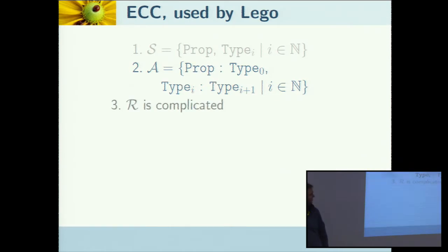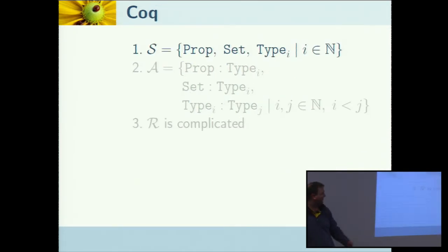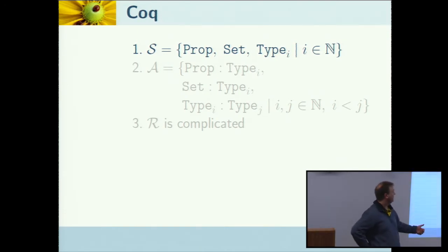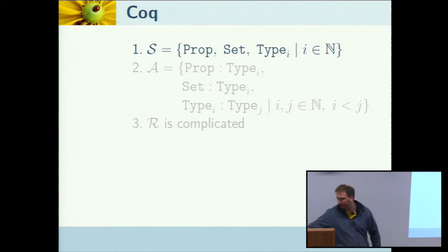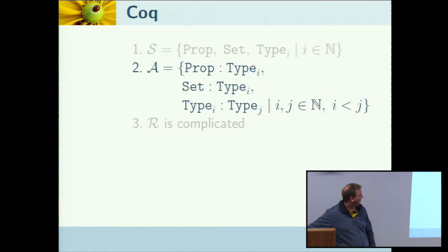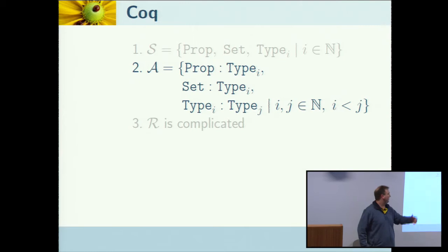The next example is Coq, which we've heard about last time. Basically you've got propositions, you've got sets, and then you've got types, which basically are types for statements about propositions and types for statements about sets. And then again you've got a whole sequence of those types. Basically at any level you can talk about any earlier level.